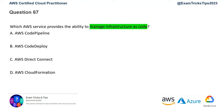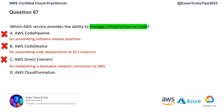Option A, CodePipeline — CodePipeline is used for automating software release pipelines. It's not used for managing infrastructure as code, so that's incorrect. Option B, AWS CodeDeploy — CodeDeploy is for code deployment, as the name suggests. It does not give you the ability to manage infrastructure as code, so that's wrong. Option C, AWS Direct Connect — this is the most obviously wrong option. It has nothing to do with infrastructure as code; it's a network element used to establish a direct line between your on-premises network and AWS.